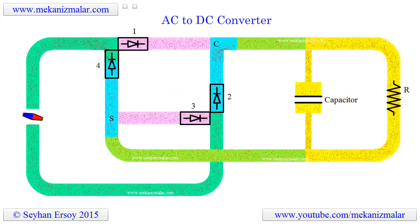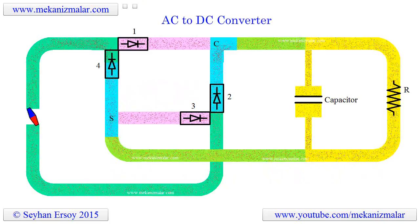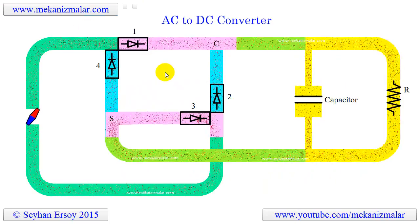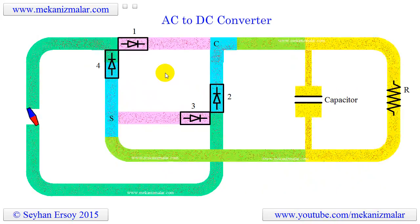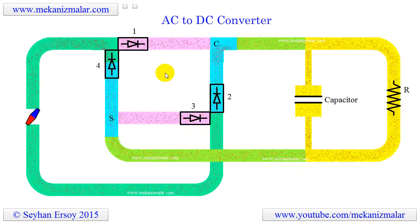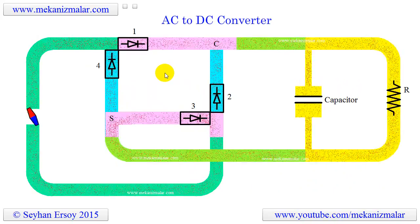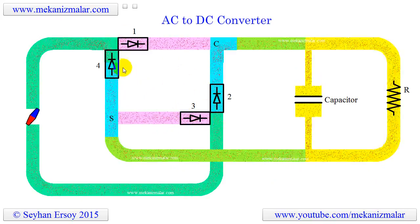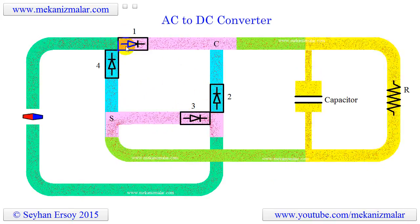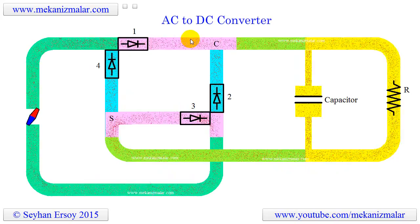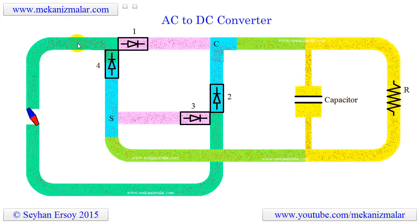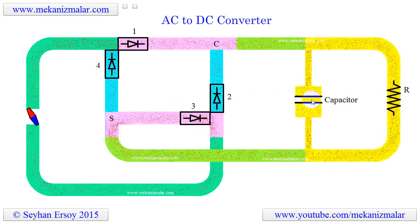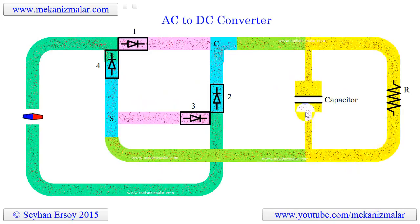There are many different types of AC to DC converters. In this animation we are showing you the bare-boned AC to DC converter. This simple converter uses four diodes and one capacitor. Diodes act like check valves which allow the flow to pass in one direction but not in the other, while the capacitor is used just like an accumulator to smooth out the flow irregularities.